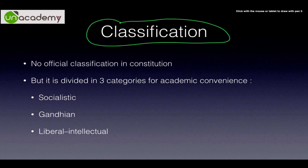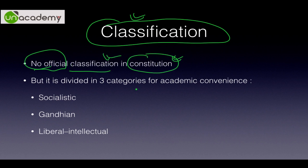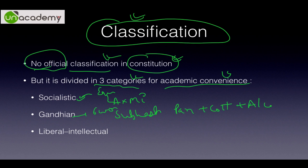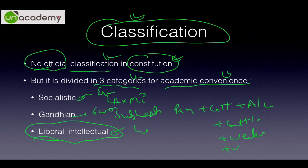Now we will deal with the actual classification of directive principles. There is absolutely no official classification in the constitution — I have read it thrice and never seen any. But most textbooks, especially Laxmikant and Subhash Kashyap, categorize DPSP into three categories for academic convenience: socialist principles, Gandhian principles, and liberal intellectual principles. Gandhian principles can be remembered with six words: panchayat, cottage industry, alcohol, cattle, weaker section, and village.